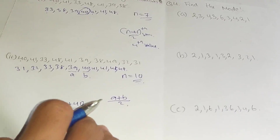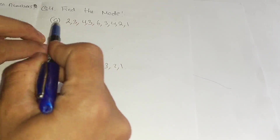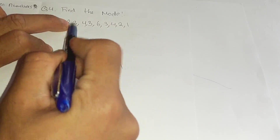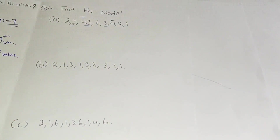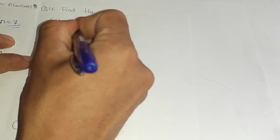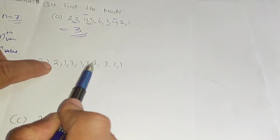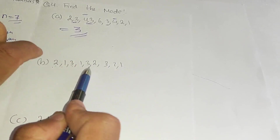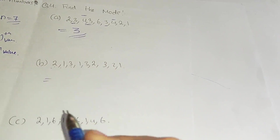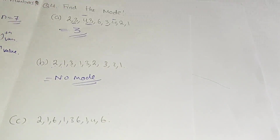For mode: given numbers 2, 3, 4, 3, 6, 3, 4, 2, 1 — number 3 repeats 3 times and number 4 repeats 2 times, so mode is 3. In another example: 2, 1, 3, 1, 3, 2, 3, 2, 1 — each of 1, 2, and 3 repeats equally, so there is no mode because every observation is repeating equally.